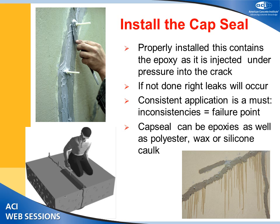If capsule installation is not done correctly, problems occur — epoxy can leak all over the surface rather than staying inside the crack. Capsules are typically epoxy-based, though polyester, wax, or silicone caulk have also been used. Whatever material is used for the capsule must be able to sustain the injection pressure applied. Sophisticated metered equipment is available that meters and mixes the epoxy at the correct ratio — 1-to-1, 2-to-1, or 3-to-1 — and dispenses it simultaneously.